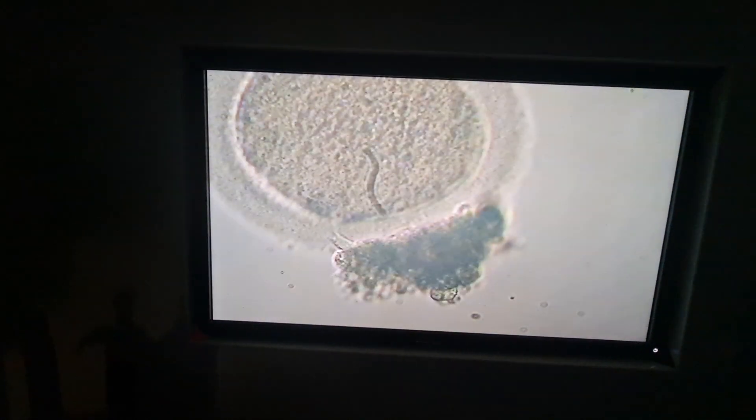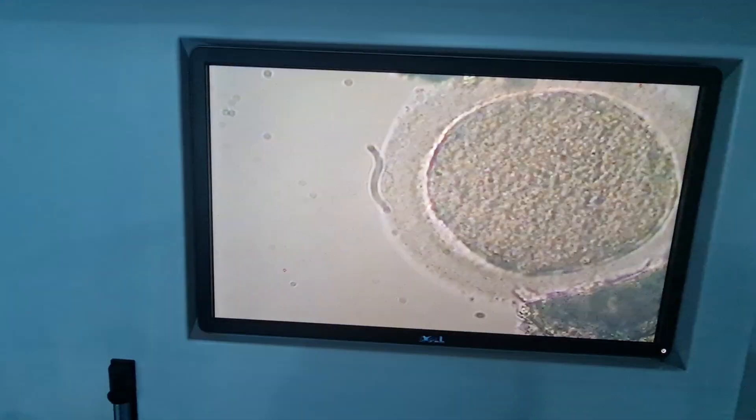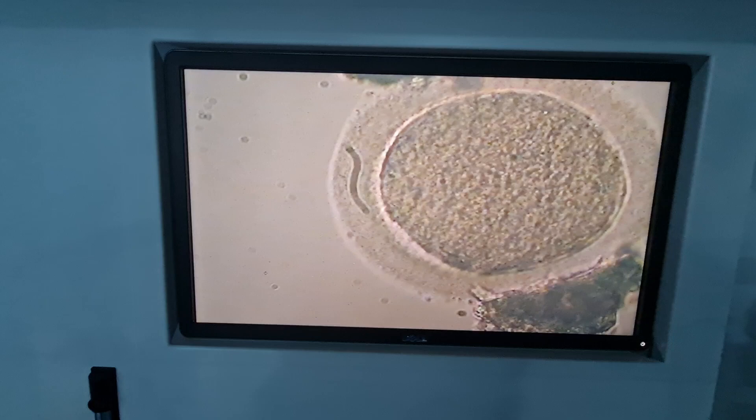And this small clump of cells, these are granulosa cells. And we have denuded the oocytes, so you can see the zona and perivitelline space.